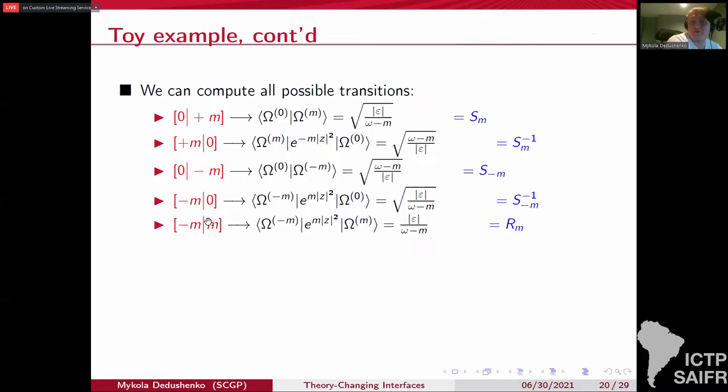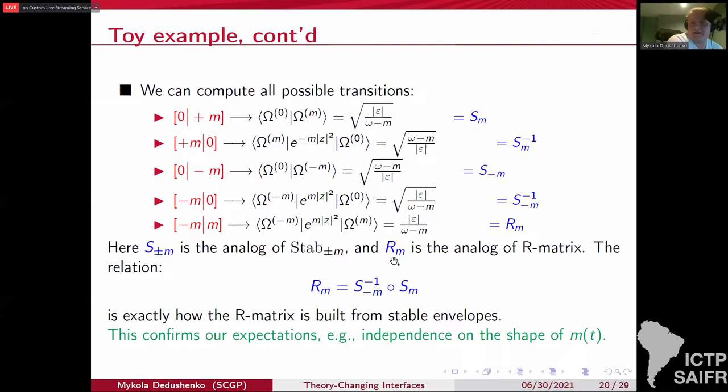Or you can go from minus M to zero, zero to minus M, or from M to minus M. Now, notice that this one from M to minus M can be deformed into going from M to zero and then from zero to minus M. And indeed, the corresponding answer is the product of these S's. So everything confirms our expectations. And in fact, these S's are the analogs, the toy analogs of stable envelopes. And R, when you go from M to minus M, the analog of R matrices, as we'll see.